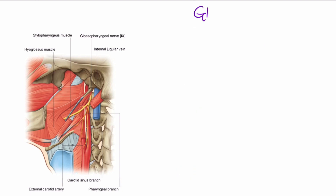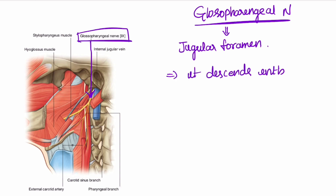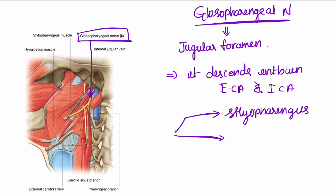The glossopharyngeal nerve exits the cranial cavity through the jugular foramen. It descends between the external carotid and internal carotid arteries, and it supplies the stylopharyngeus and the pharynx.